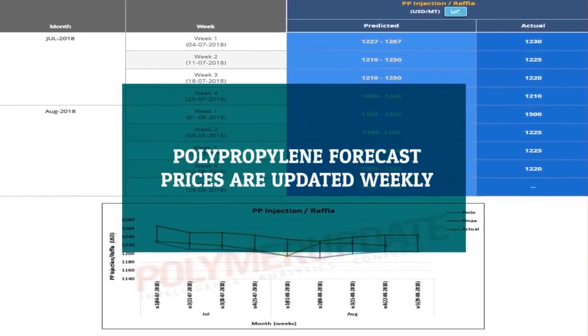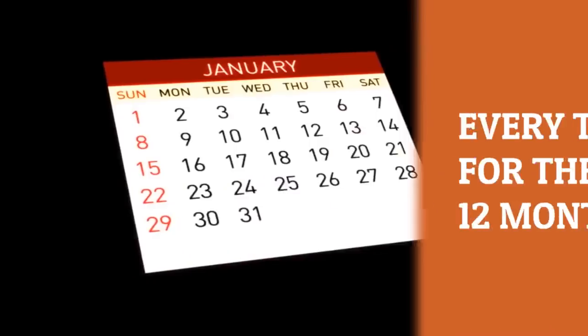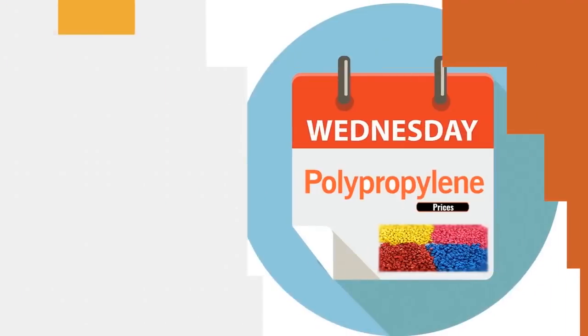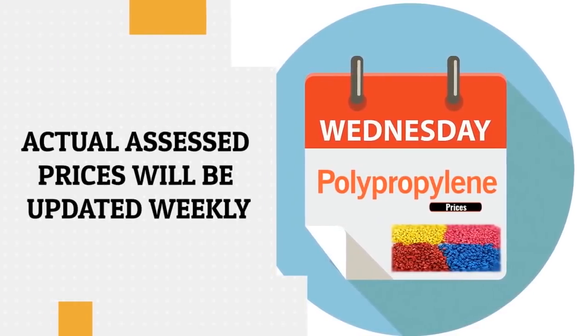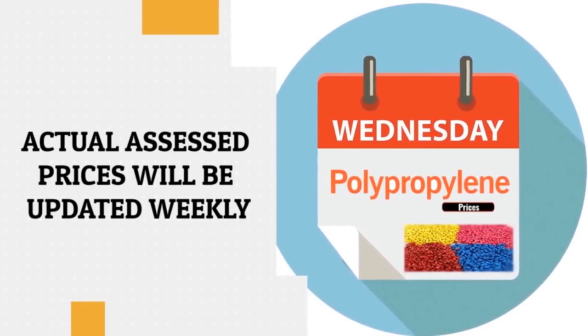Polypropylene forecast prices are updated weekly every Tuesday for the next 12 months, whereas actual sales prices will be updated weekly every Wednesday.